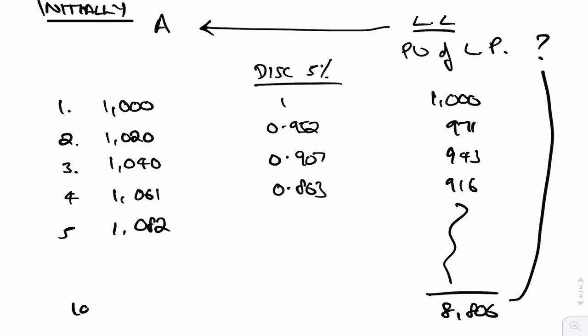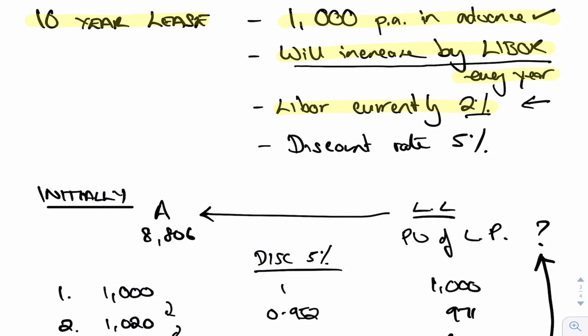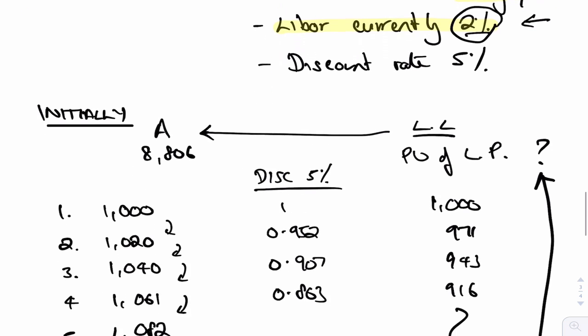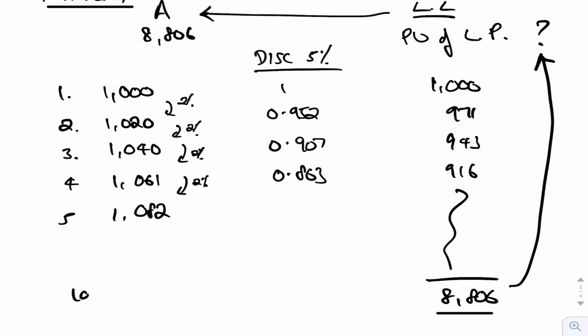That discounted figure is what you would use, and therefore it would also be your opening asset as well. Can you see what the difference is? When it was just an index, I used 1,000 every year because we didn't say the index would go up. This time, we're doing it on a rate — it'll increase by LIBOR every year, and LIBOR is currently 2%, so I presume it'll always increase by 2%. I'm keeping my assumption the same as it was at the start. Of course, what we'll have to do next year is change it all again and re-measure based on the current LIBOR at that point. But at the initial start of the lease, I would start off with 8,806.